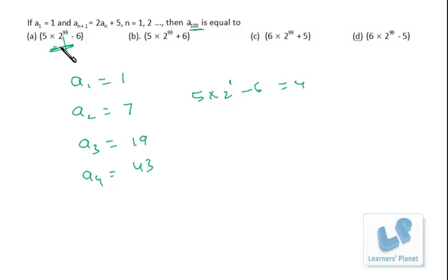But we have the value of a₂ as 7, so this is the incorrect choice. Similarly over here, it's 5 times 2¹ plus 6, that is 10 plus 6 equals 16. But we have 7, so even this is incorrect.